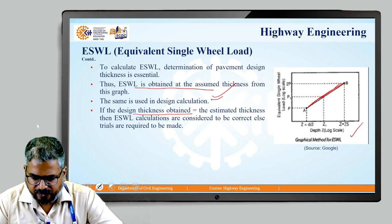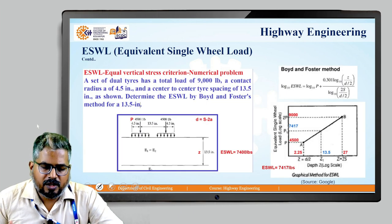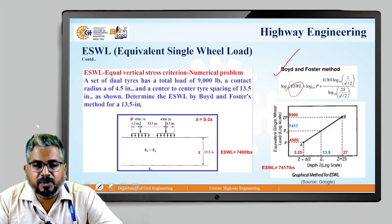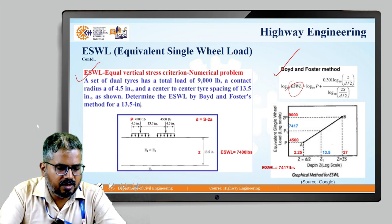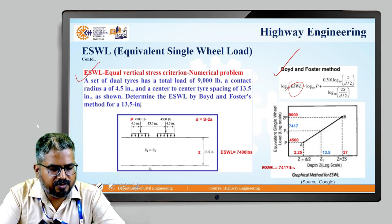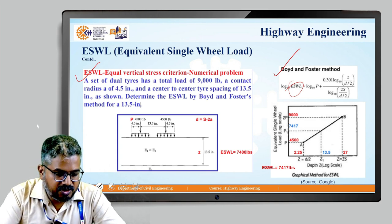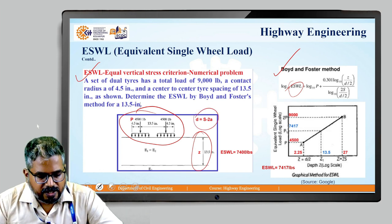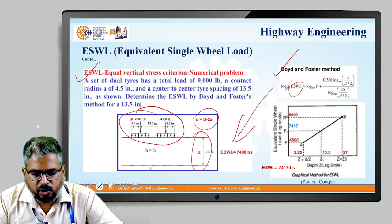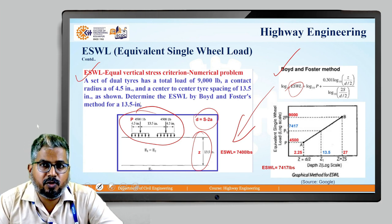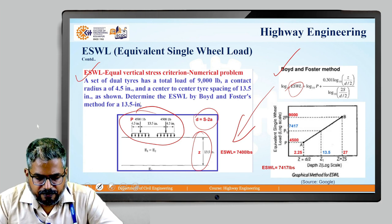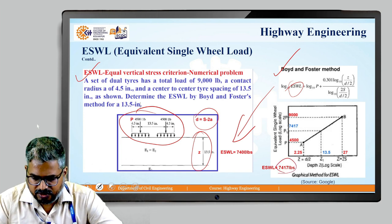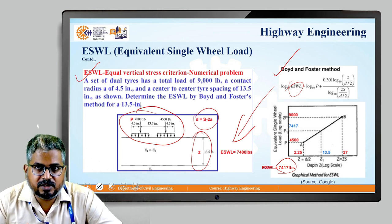There is another approach called the Boyd and Foster method, based on which the ESWL value can also be calculated. As an example, for a dual wheel assembly with given parameters, the ESWL came out to be 7,400 pounds using the Boyd and Foster method, while using the graphical method it comes out to be 7,417 pounds. You should practice this at home.